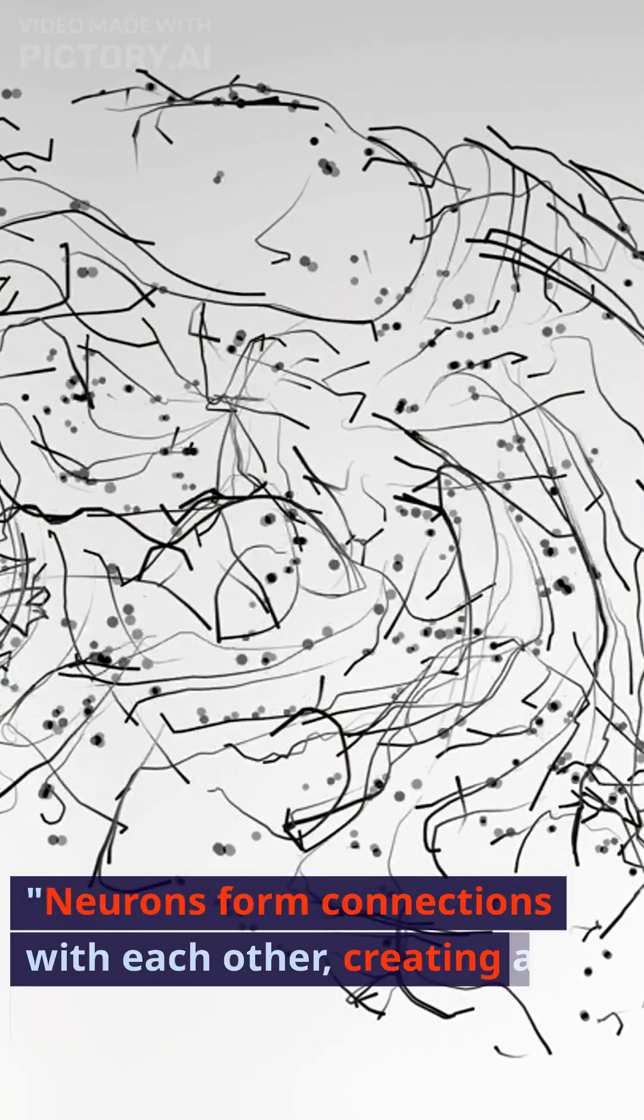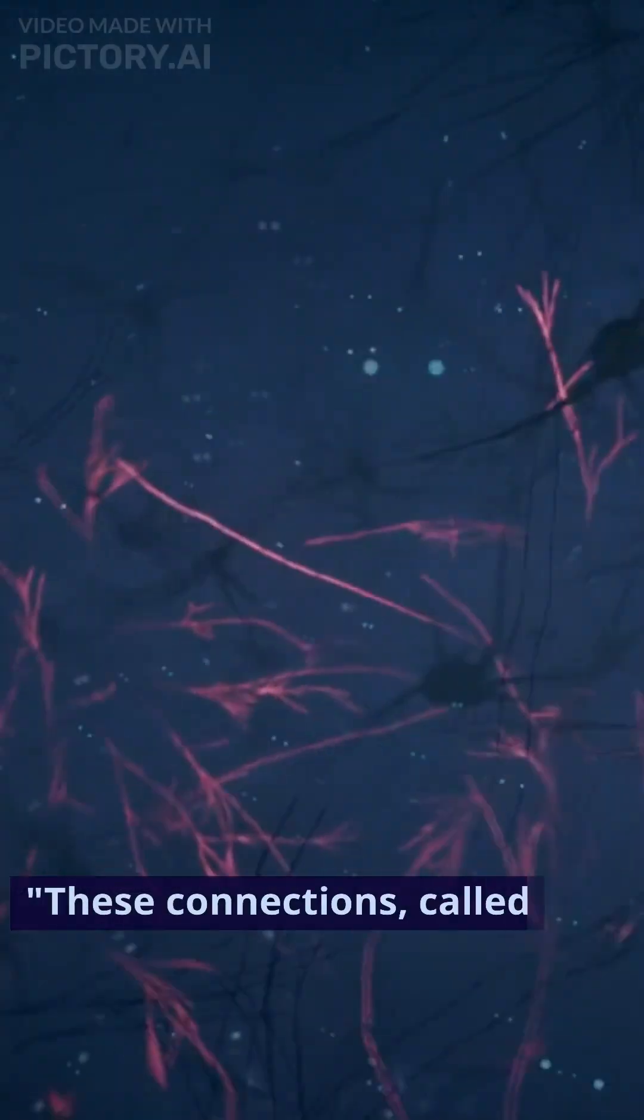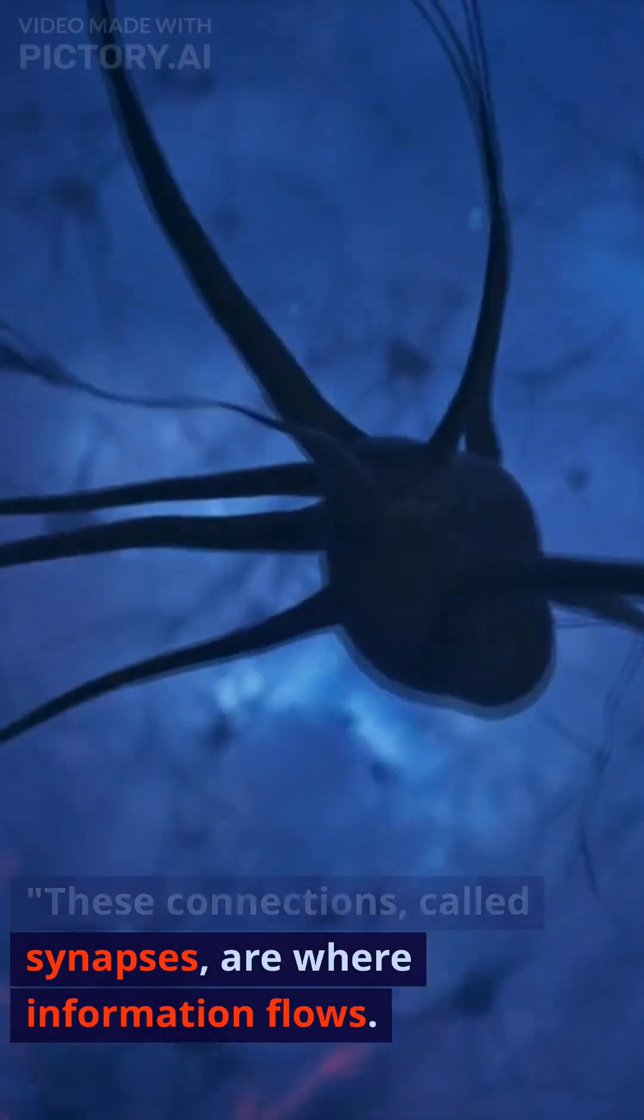Neurons form connections with each other, creating a vast network. These connections, called synapses, are where information flows.